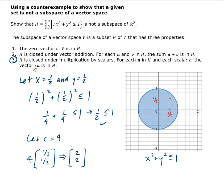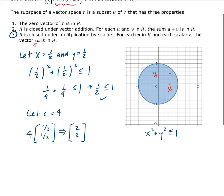Now if we check the condition for H, you're going to see that it's not true. So you have two squared plus two squared. This is not less than or equal to one.